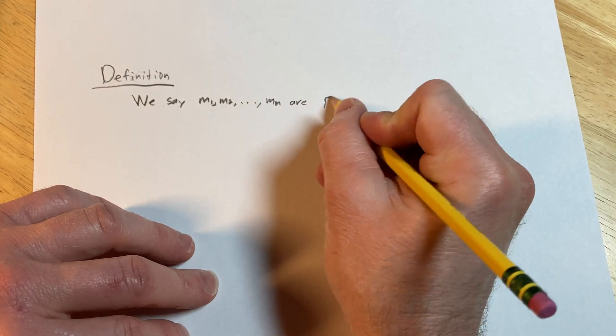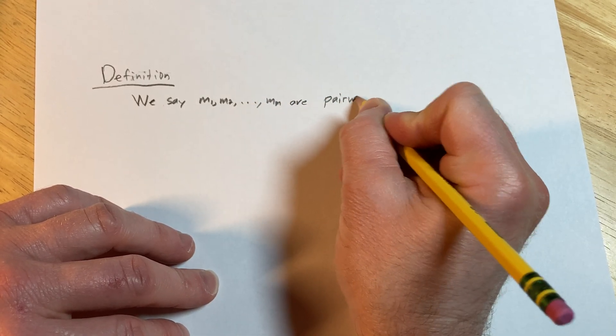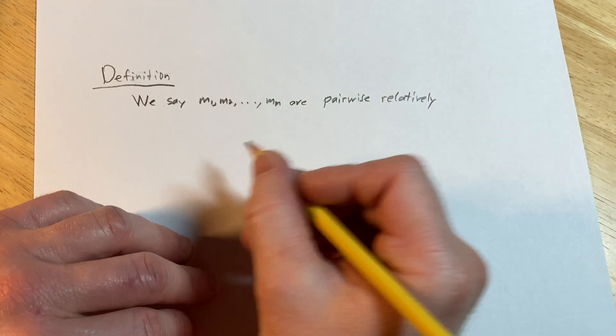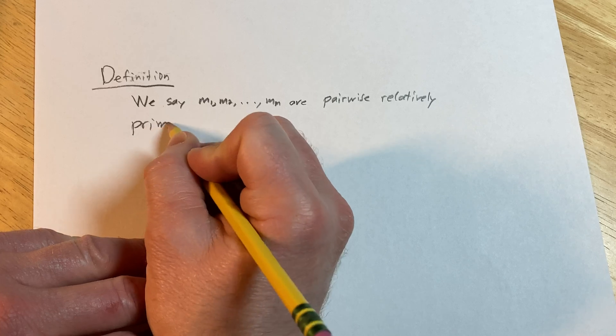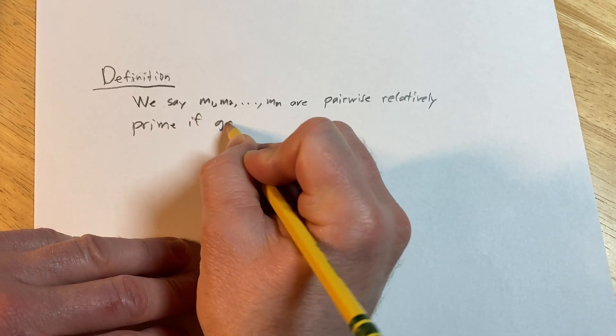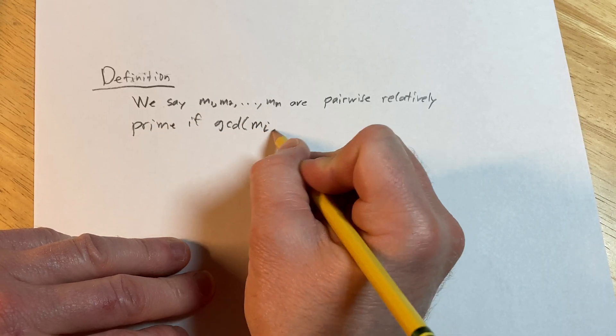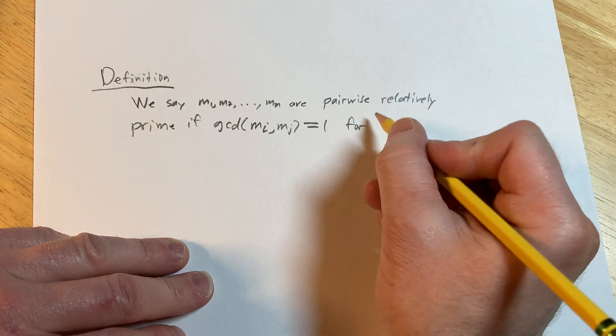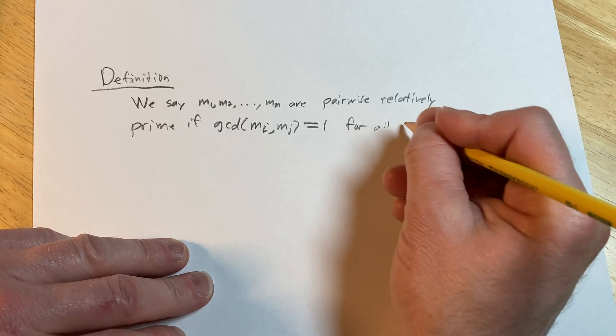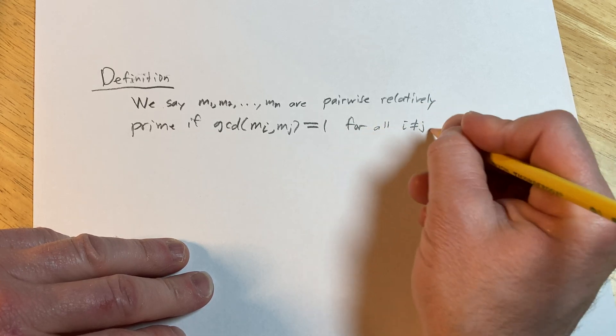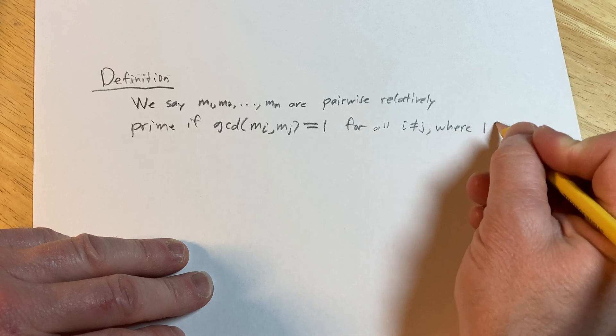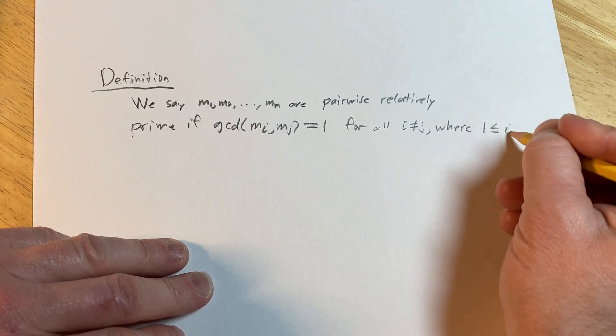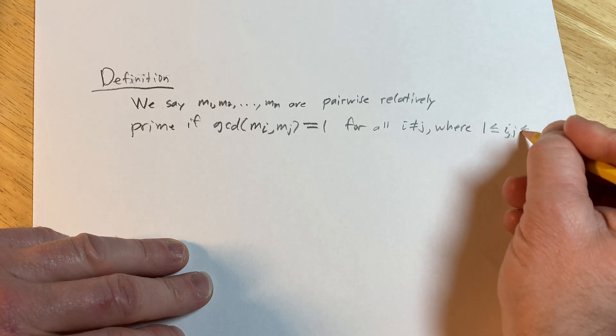are pairwise relatively prime if the GCD of m sub i, m sub j is equal to 1 for all i not equal to j, where i and j run from 1 to n.